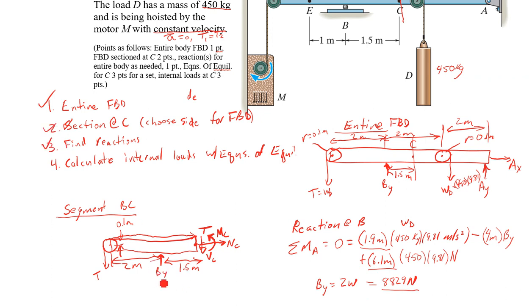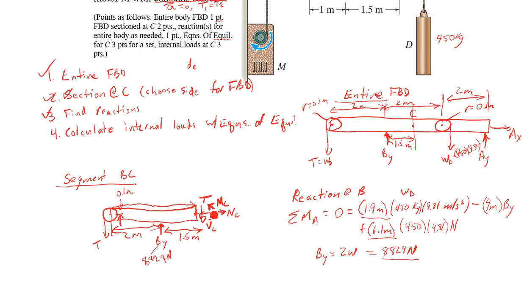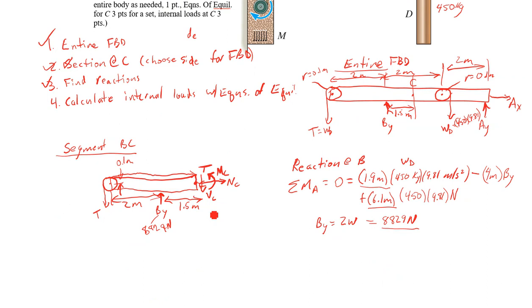Great. So now I can put that in here. This is 8,829 newtons. And I can finally add these up. So what do I have acting here? I'm going to do three equations of equilibrium. I need to find some of my forces in X, some of my forces in Y, and my moments about C. So I can find MC directly.